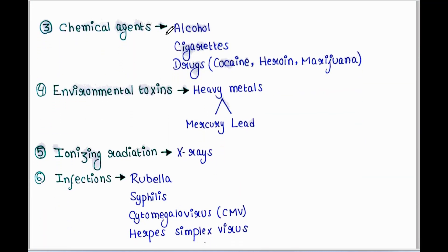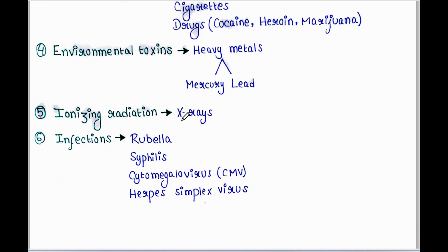Chemical agents including alcohol, cigarettes, and drugs like cocaine, heroin, and marijuana. Certain environmental toxins like heavy metals such as mercury and lead, ionizing radiation like X-rays, and infections like rubella, syphilis, cytomegalovirus (CMV), herpes simplex virus, and others.